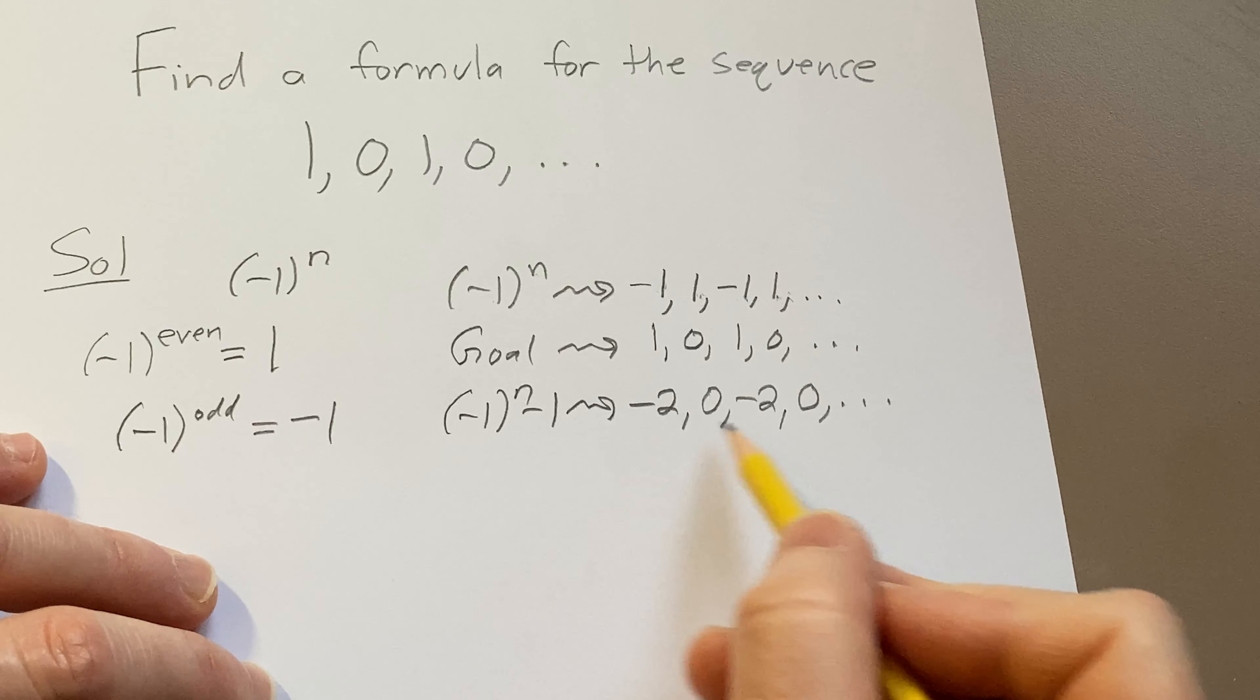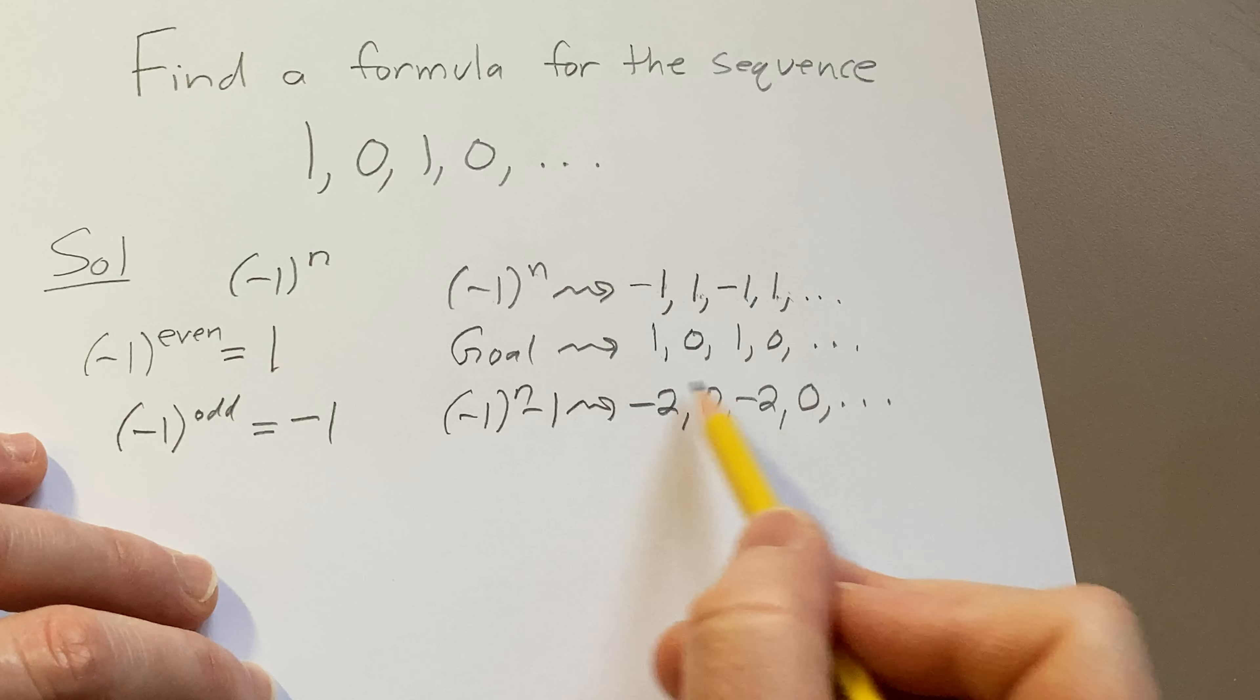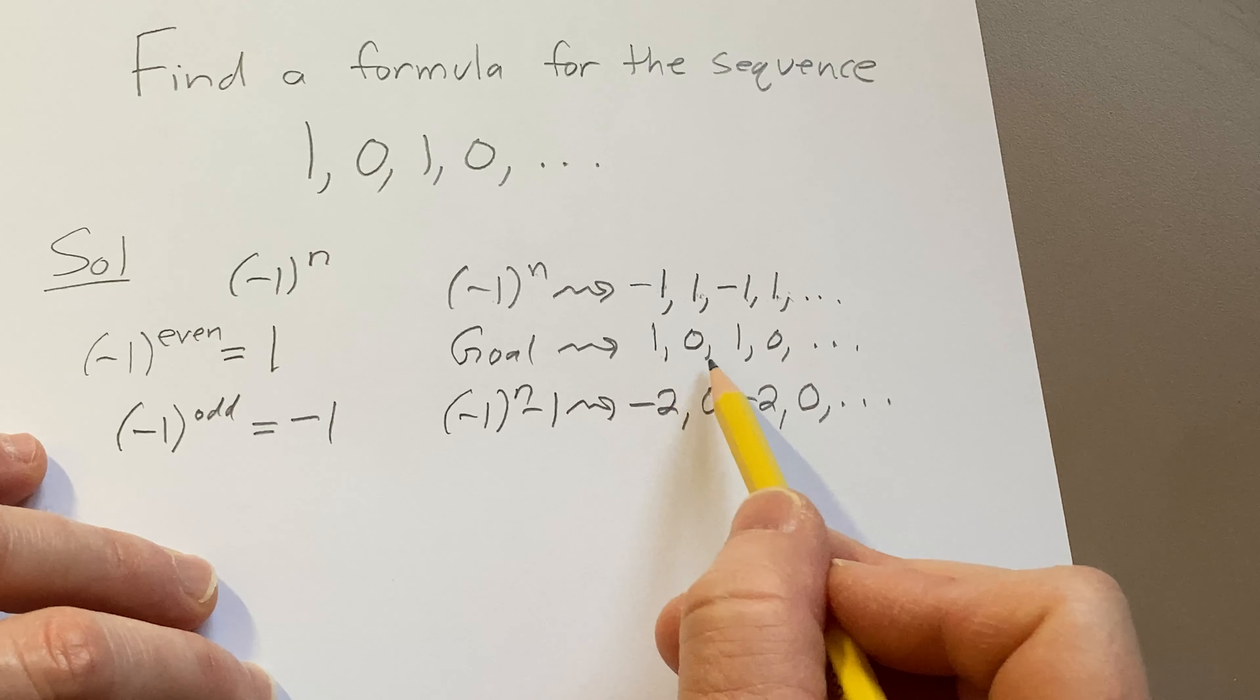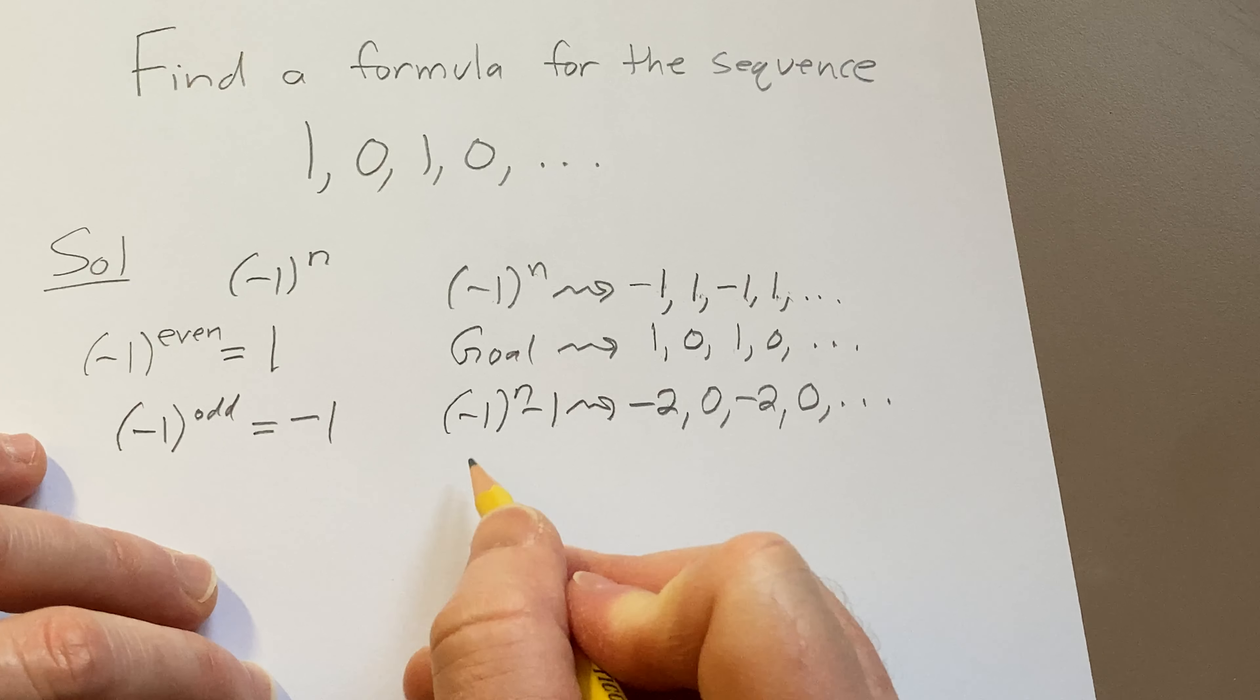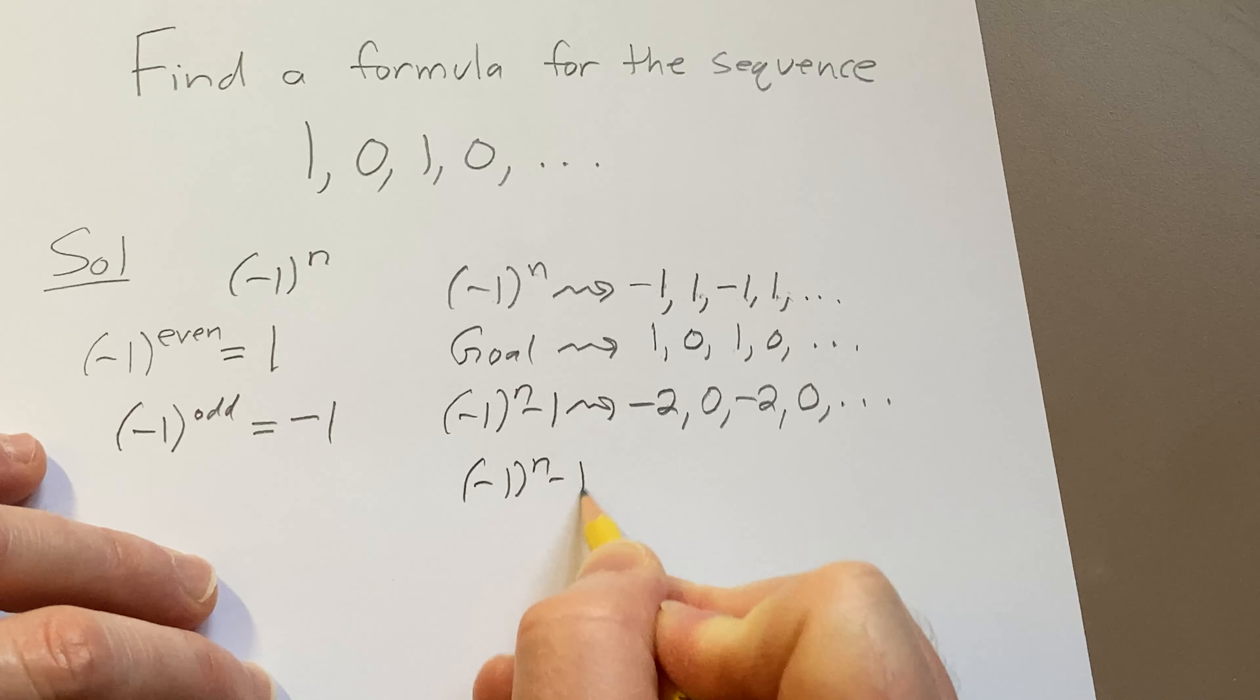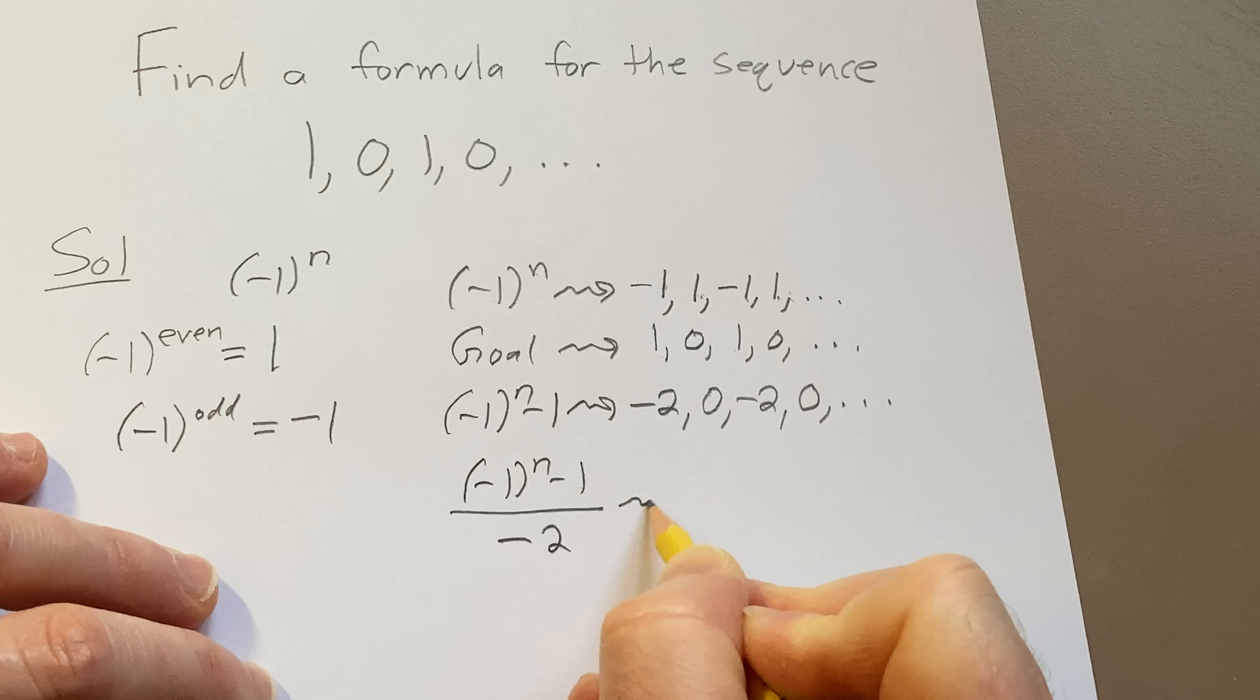So now we have this sequence, and we're trying to get this one. So now it's a little bit easier, thanks to having 0 in place. So we've accomplished part of our goal. So now these -2's need to become 1's, so we can take this and divide it by -2.